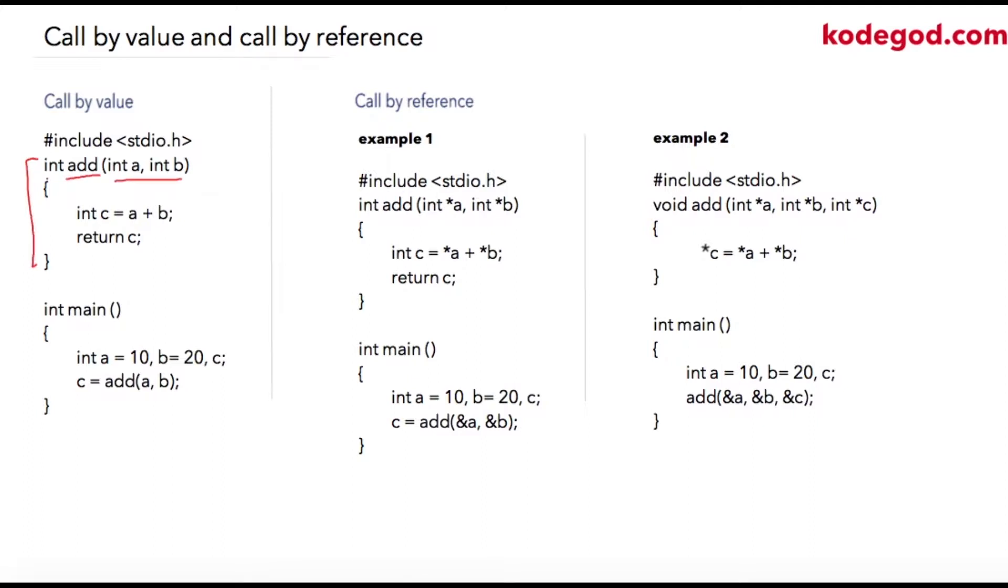And it will return me an integer. So I am declaring another variable int c and storing addition of a and b into it and then I am returning c.